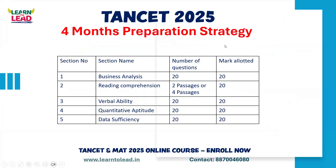So you know the TANCET exam pattern. TANCET MBA has questions in five sections. Each section has 20 questions. The five sections are: Business Analysis, Reading Comprehension, Verbal Ability, Quantitative Aptitude, and Data Sufficiency.